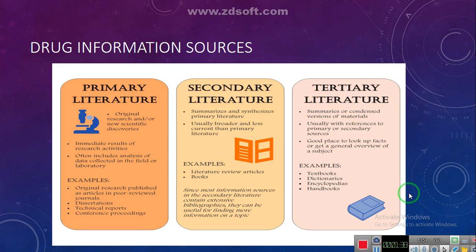The pharmacist can utilize three types of literature to provide drug information. Number one is the primary literature, which is basically the original research paper or any new scientific discovery — for example, original research papers published in peer-reviewed journals.